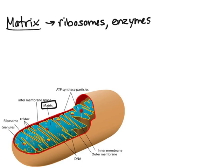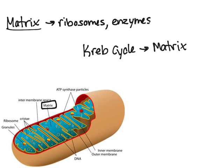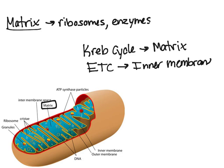As we've learned before, the Krebs cycle occurs in the matrix, while the electron transport chain is located on the inner membrane — this yellow stuff shown on the diagram. The electron transport chain is where the high-energy electrons from glucose are used to make ATP.